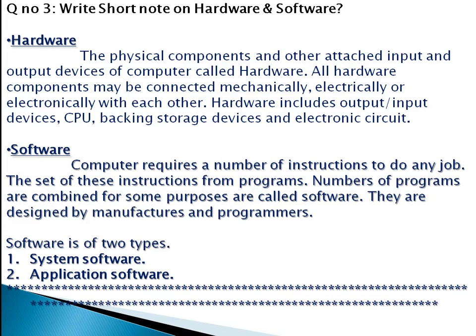Whenever you have to write a short note on hardware and software, you have to write both headings. If they say write a short note on hardware, you have to write just the first paragraph. If they say write a short note on software, you have to write only the software heading.